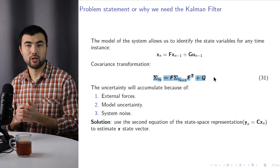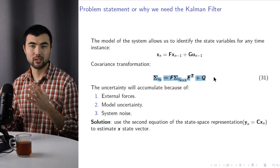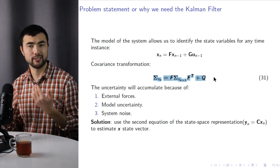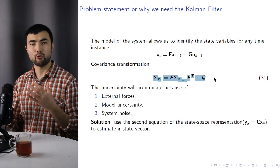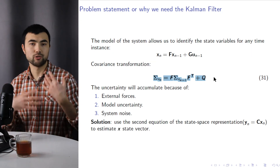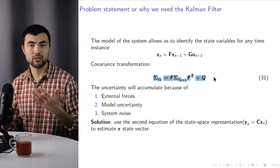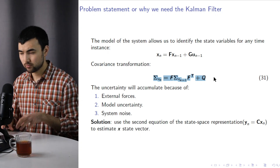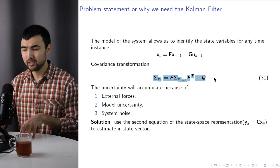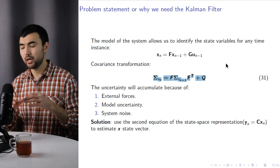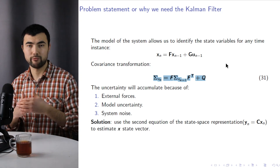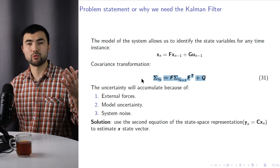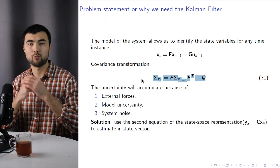Second, we have model uncertainty — the model cannot fully and precisely describe the physical system. And finally, we have system noise. For example, if we talk about a quadcopter, we have the motor that generates mechanical noise, and this noise will disturb the sensor readings. So that's why using just the model to estimate the state vector is not reliable, because the covariance matrix is going to explode after many iterations — representing very high uncertainty.